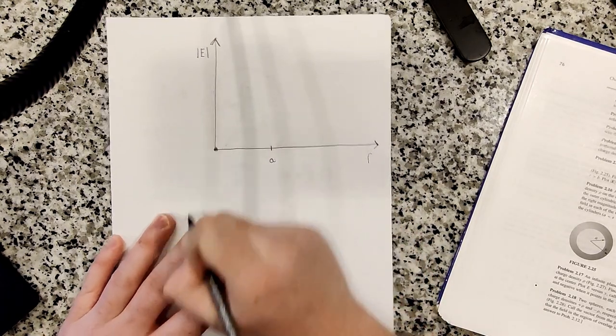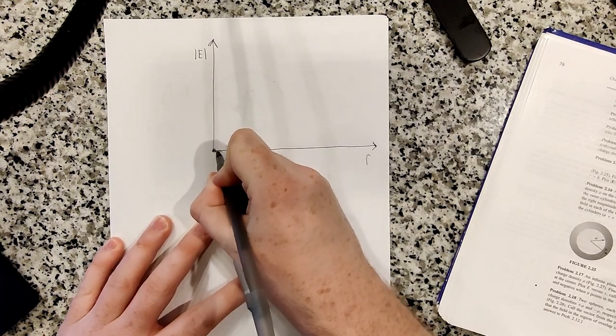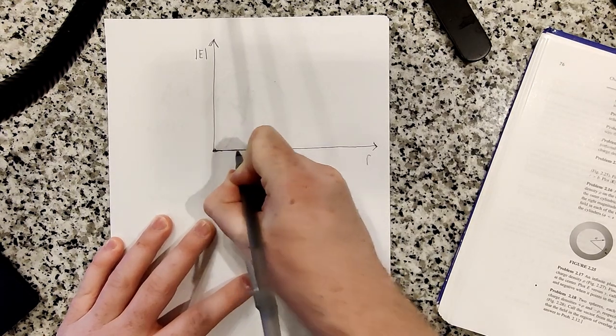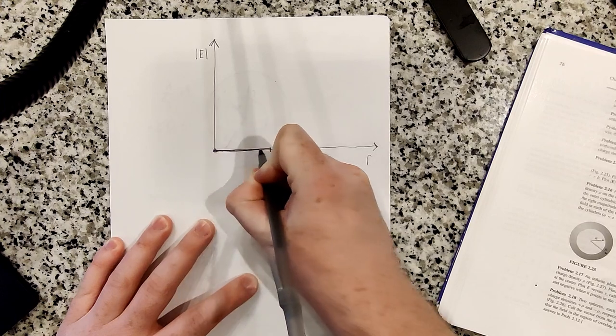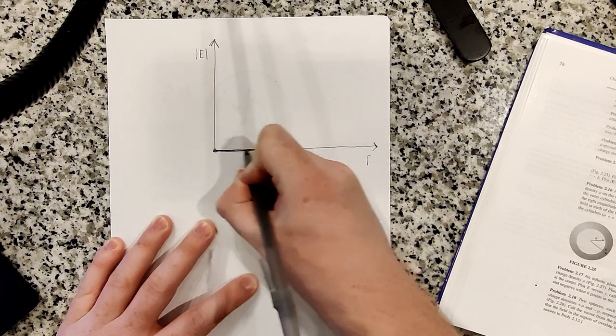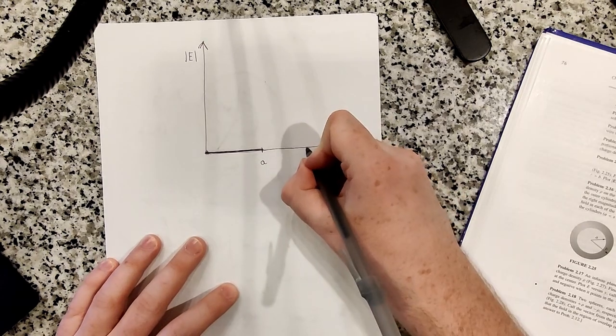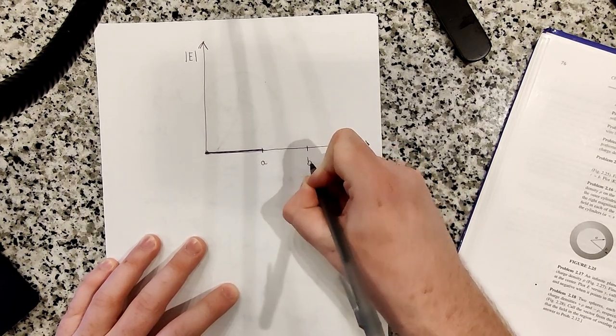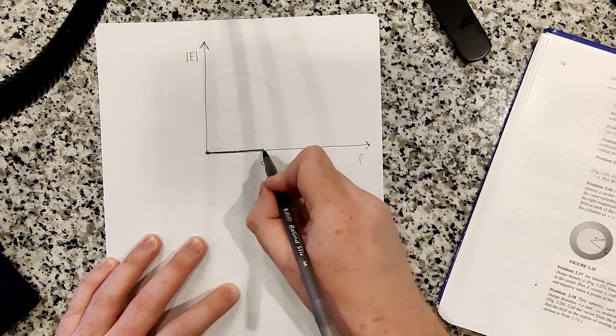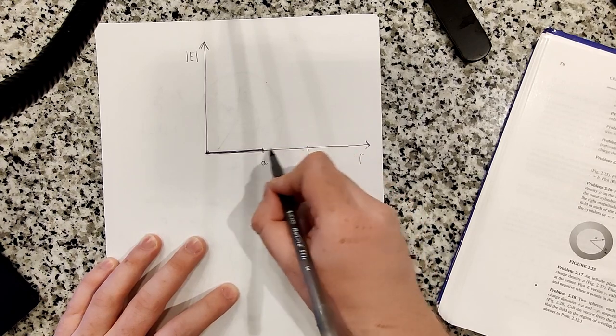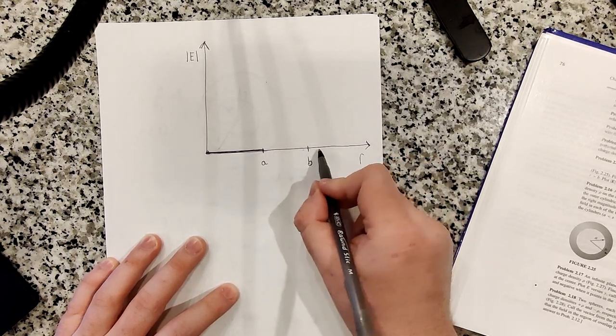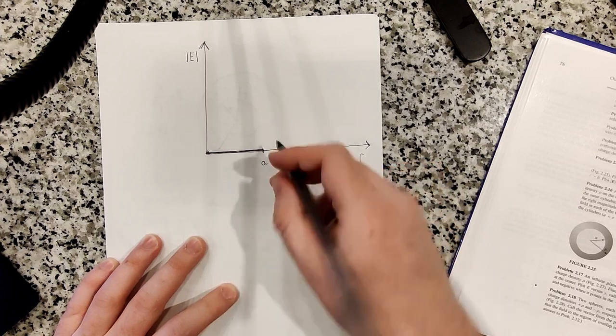So all the way out to a, if you recall, the electric field we found was zero. So the magnitude of the field is zero. So we just stay on the x-axis, or the r-axis here, up into a. I'm going to mark a place for b. So this region is inside of the two, between the two spheres. And this region and beyond is outside of the whole thing.